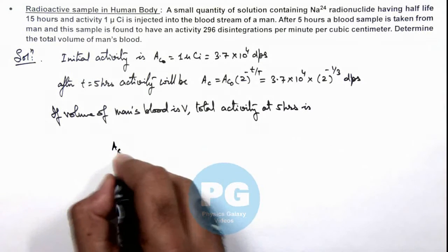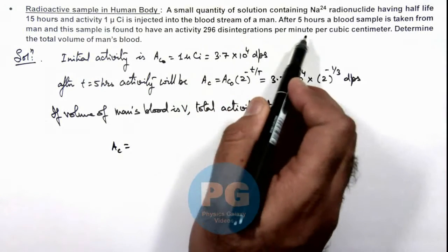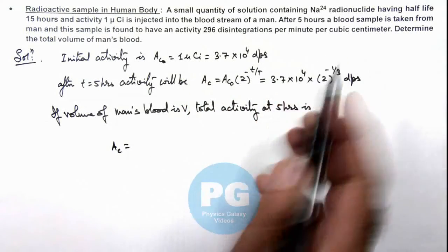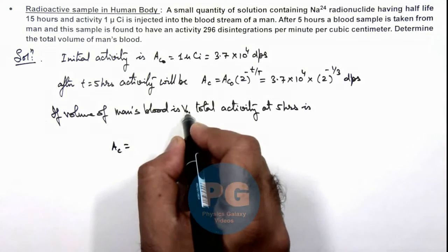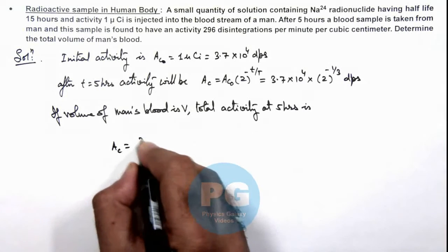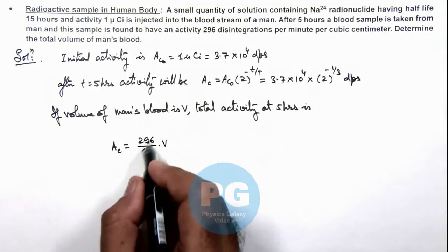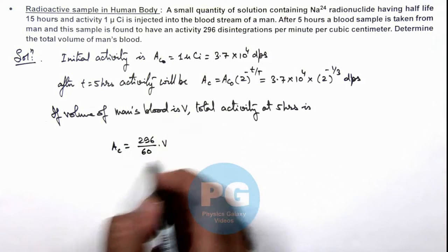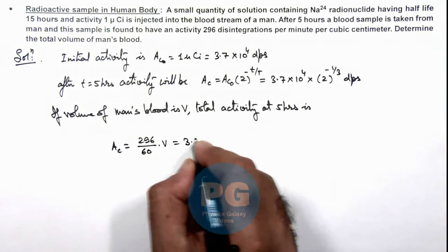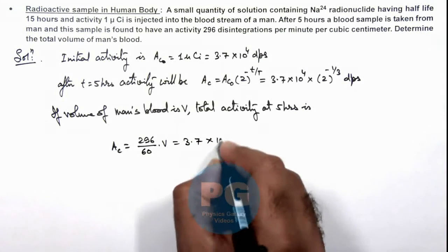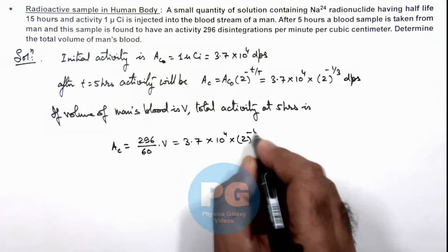This total activity we can write, this is 296 disintegrations per minute per cubic centimeter. If this volume is given in centimeter cube, then we can write it 296/60 multiplied by V, because this is per minute. So total activity in volume V should be this which we can equate to 3.7 × 10⁴ × 2⁻¹/³.